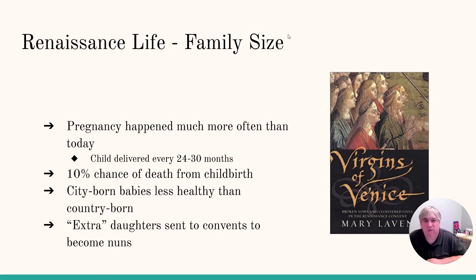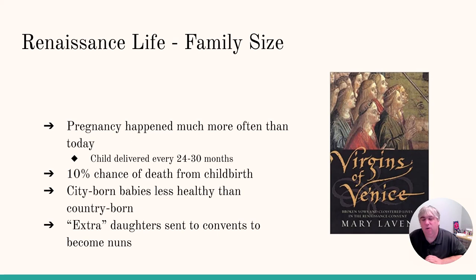Family size: if you are a woman, you're going to deliver a child every 24 to 30 months, and you're going to have a 10% or more chance of dying in childbirth — and the more kids you had, the more that chance went up. Babies born in the city are more susceptible to disease, pollution, and filth, so they are going to be less likely to survive into adulthood. And if you're a second daughter or more, you're probably going to become a nun, because only the first daughter is going to be married off to a suitor of choice. So if you were a second, third, or fourth daughter, you're going to become a nun and go to a monastery.